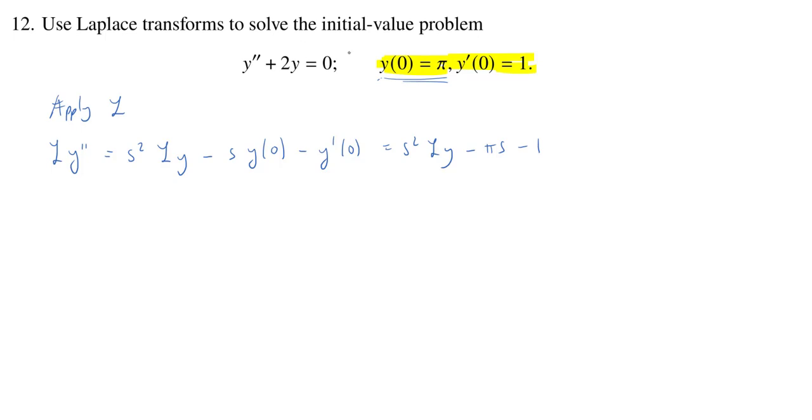The other bits are very easy to apply the Laplace transform to because we know that the Laplace transform of 2y, well, the Laplace transform is linear, so I can pull the 2 out and I just get 2L{y}. And the Laplace transform of 0 is 0. Again, linearity would tell you that.